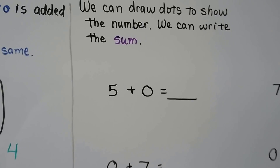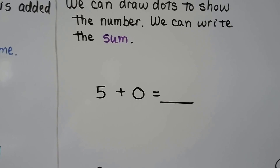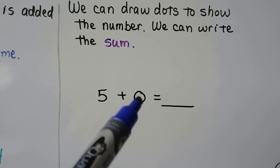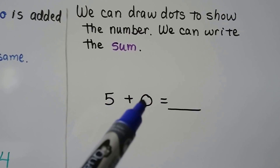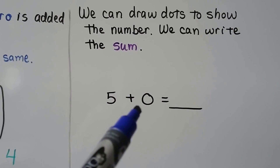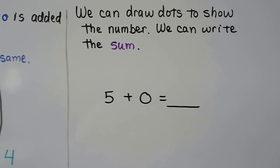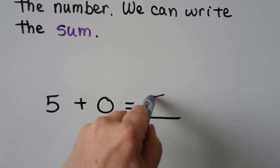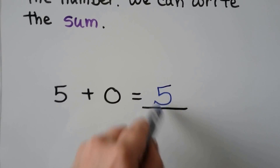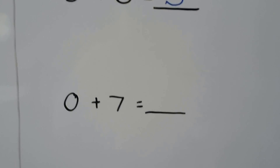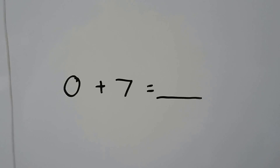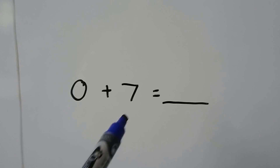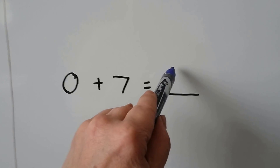We can draw dots to show the number and write the sum. Five plus zero — whenever you add zero to a number, the number stays the same — so that's going to be five. Zero plus seven — whenever we add zero to a number, the number stays the same — so it's just going to be seven.